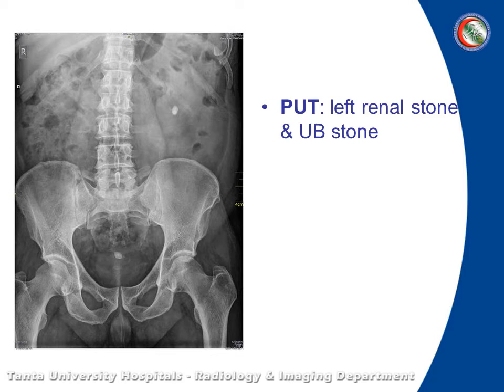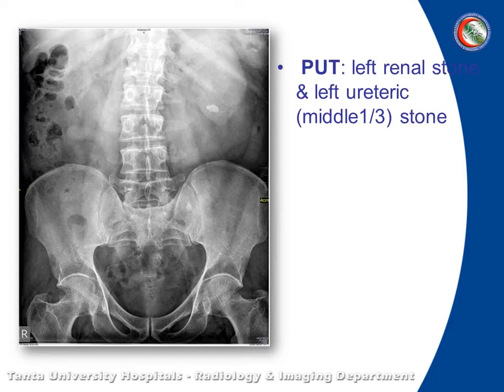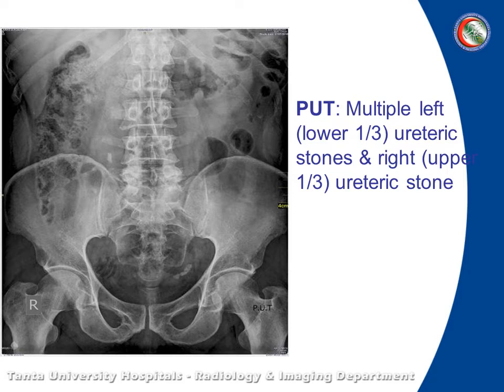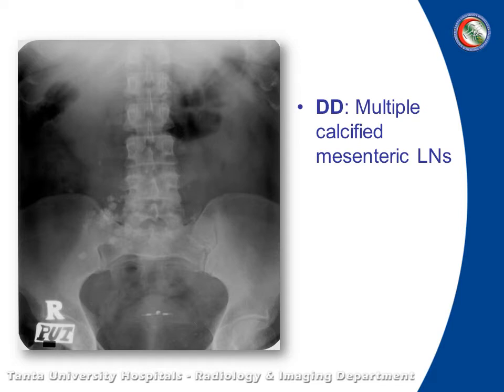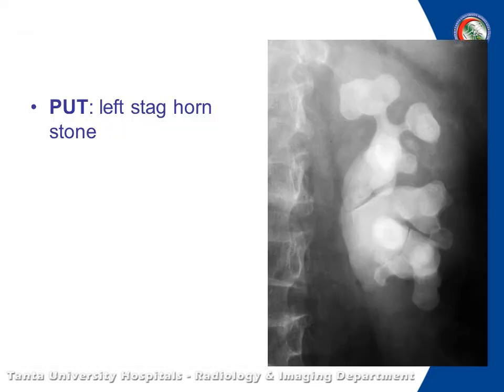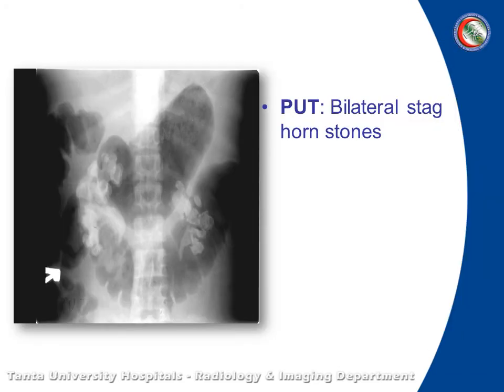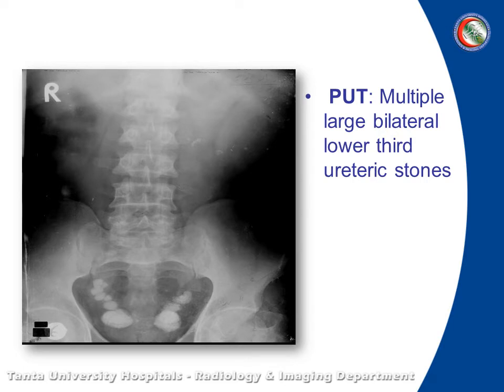This one shows left renal stone and urinary bladder stone. Left renal stone and left ureteric stone. Also, here is a mini plain X-ray with radio-opaque shadow of calculi — bilateral. This is for differential diagnosis — this is calcified mesenteric lymph node. It is not along the course of the ureter, not in the normal site of the kidneys, not in the normal site of the urinary bladder — flaky distribution and multiple. So it is calcified mesenteric lymph node. Staghorn stone — bilateral staghorn stone. Bilateral lower third ureteric stones.